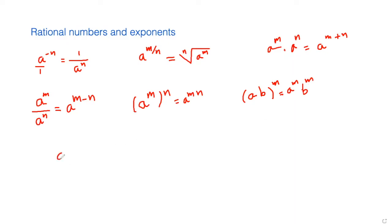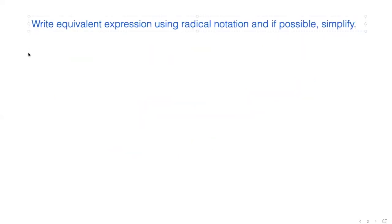If you have anything to the power 0, that is equal to 1. And anything to the power 1 is that number — so 5 to the power 1 is 5. If you have a power of 2, then you multiply 5 by itself two times, so it's 5 times 5, which equals 25. Now let's do some problems related to the radical — they ask you to write an equivalent expression using radical notation and, if possible, simplify.